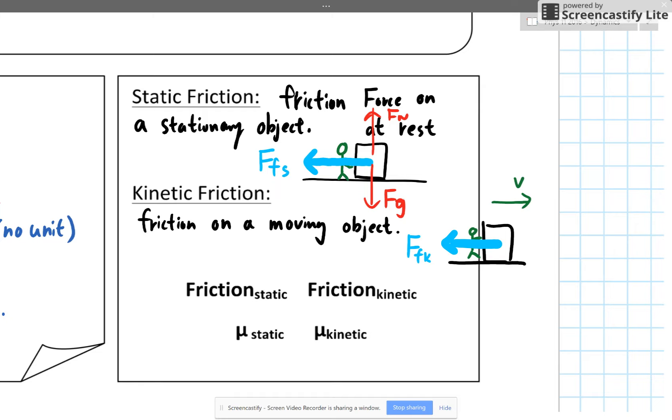It's harder to start something at rest than to make it go faster when it's already moving. So the static friction between two surfaces is always greater than the kinetic friction between the same two surfaces.